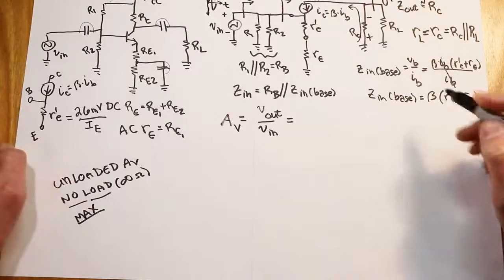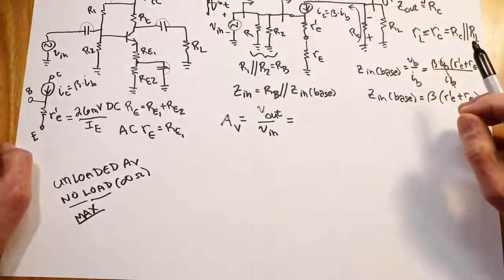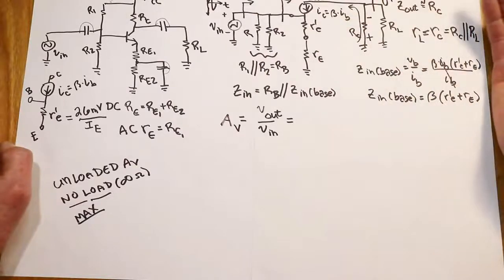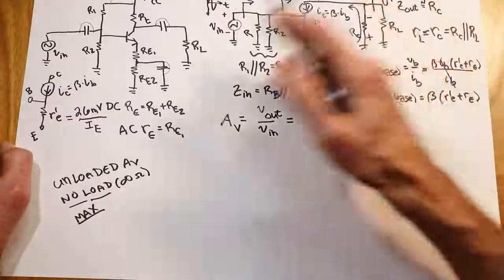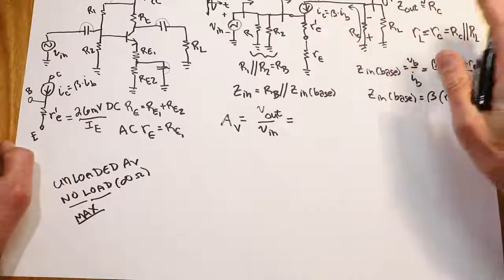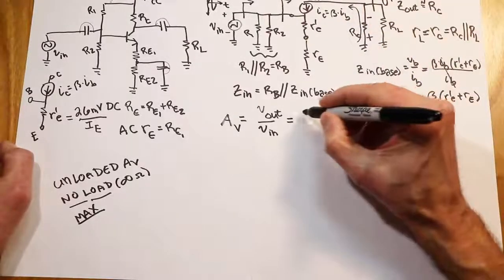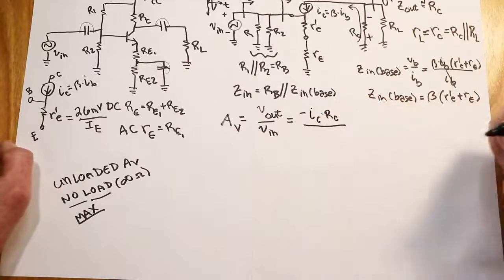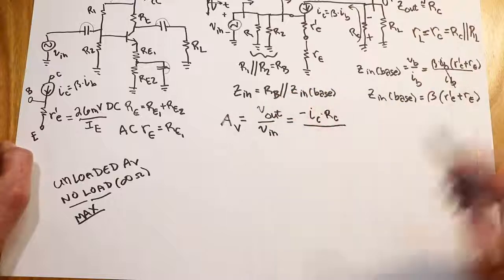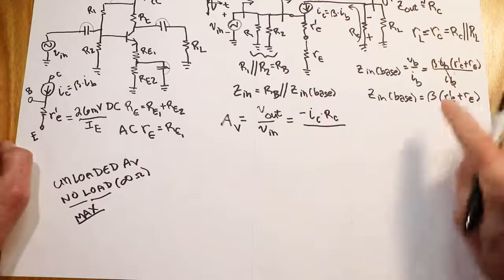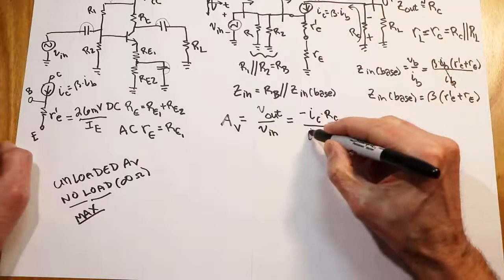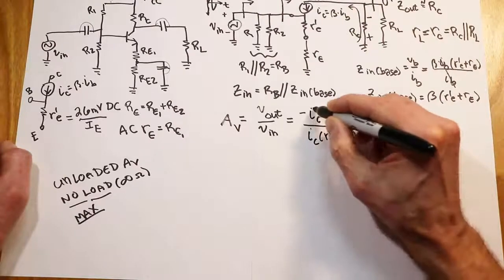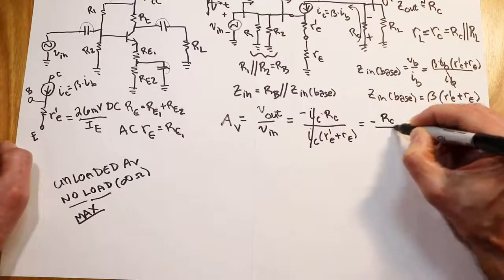In many cases this phase inversion doesn't make a difference — flipping a signal in something like an intercom or table radio, you wouldn't be able to hear the difference. In some applications you have to maintain correct phase. But be that as it may, the output is negative, so Vout = -IC × RC. The input voltage VB = IC × (r'e + RE). Those currents cancel out, giving us AV = -RC / (r'e + RE).